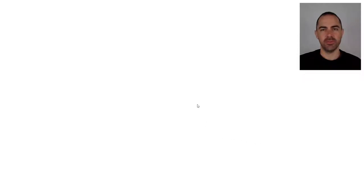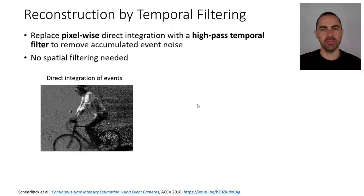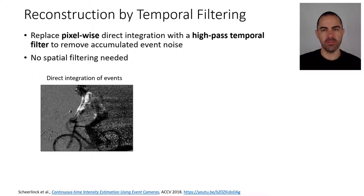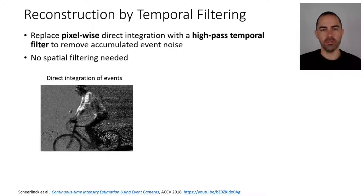Let's move on to 2018 with image reconstruction methods. We are talking about a paper that appeared at the Asian Conference on Computer Vision 2018. Events measure brightness changes — just step sizes with a contrast threshold C. Ideally, if we integrate these brightness changes, we should be able to obtain absolute intensity: from the increments you integrate and get the absolute intensity.